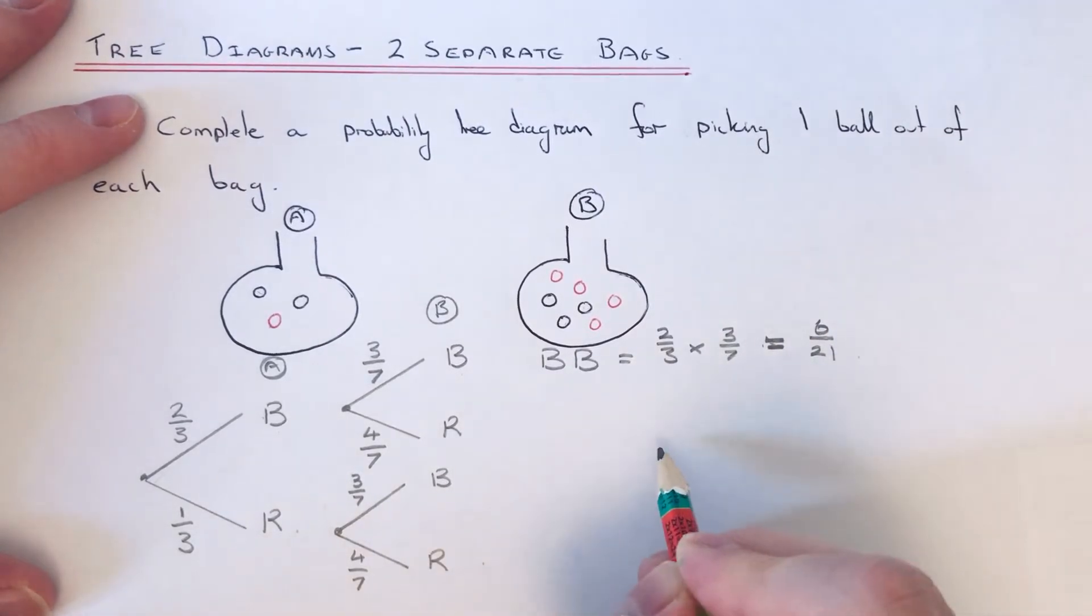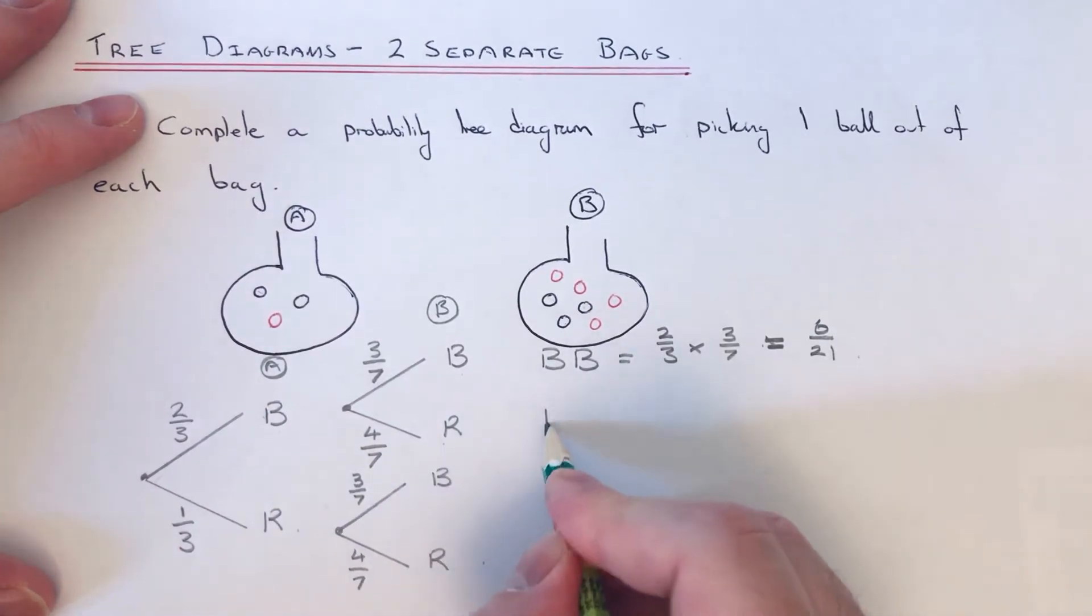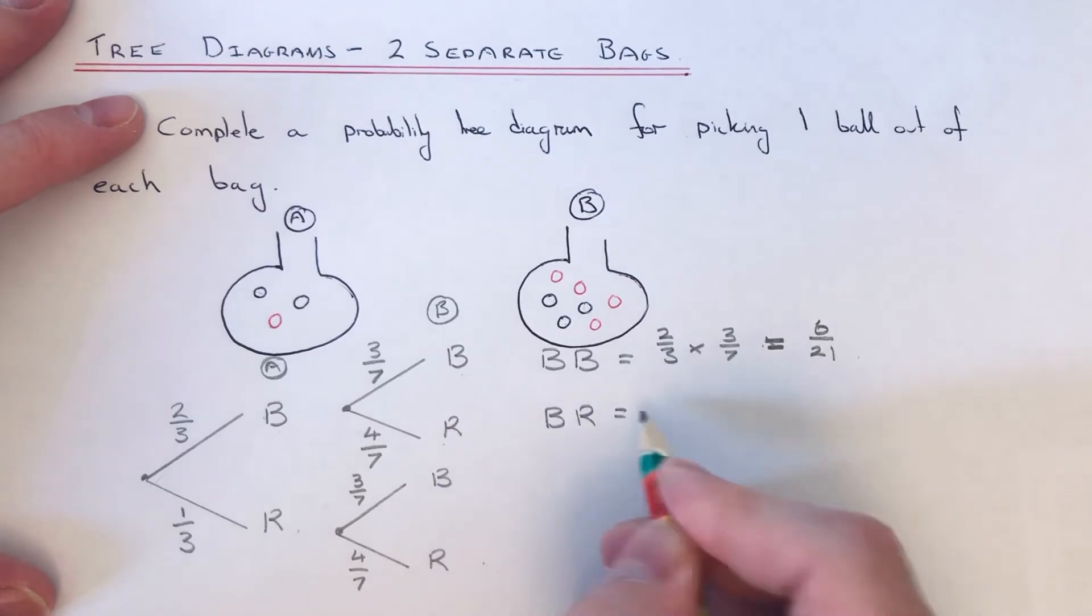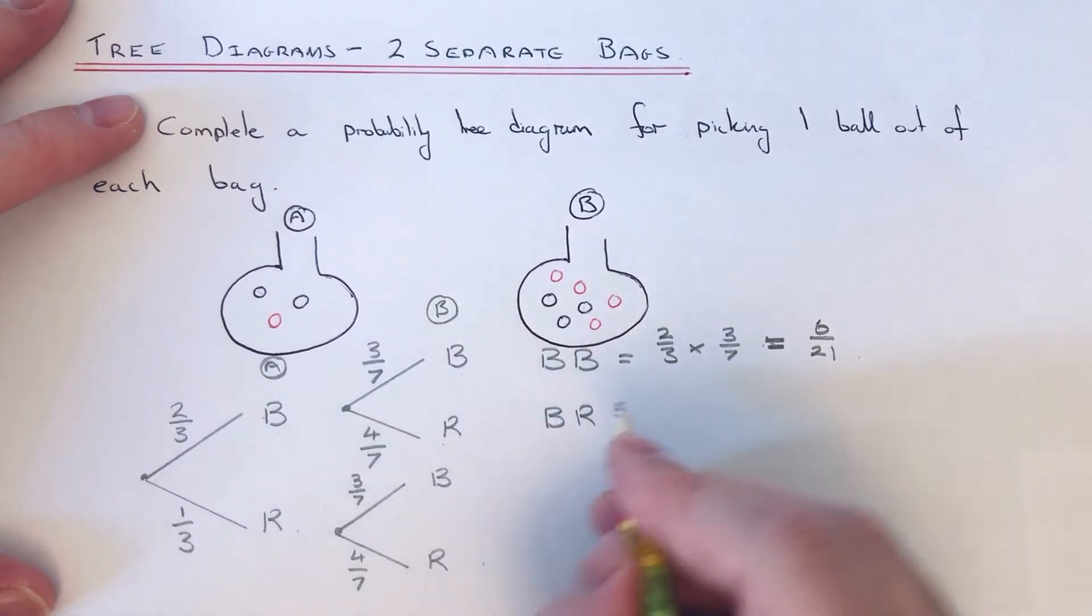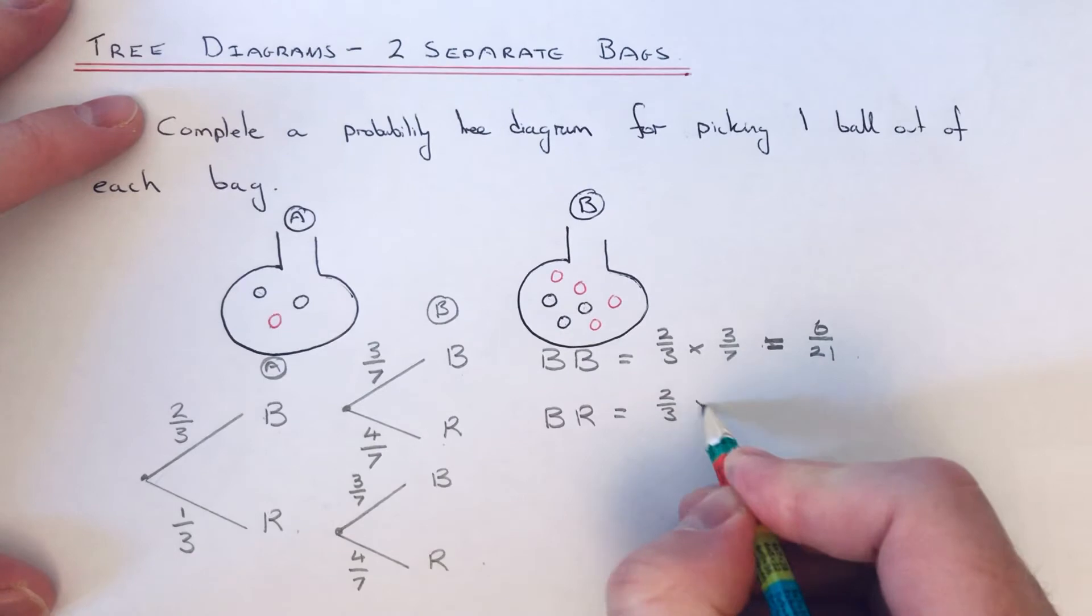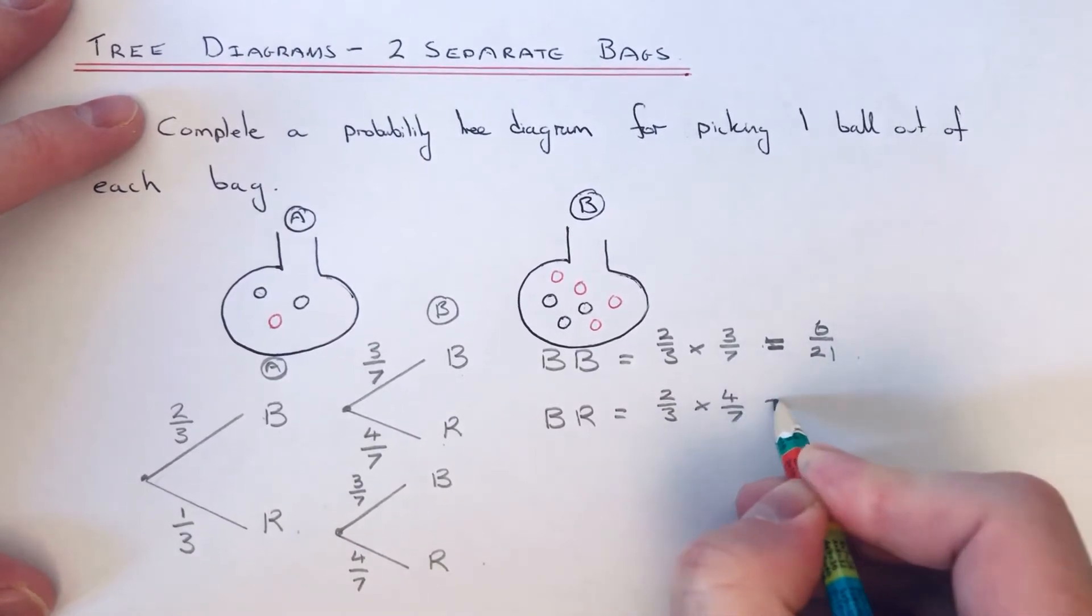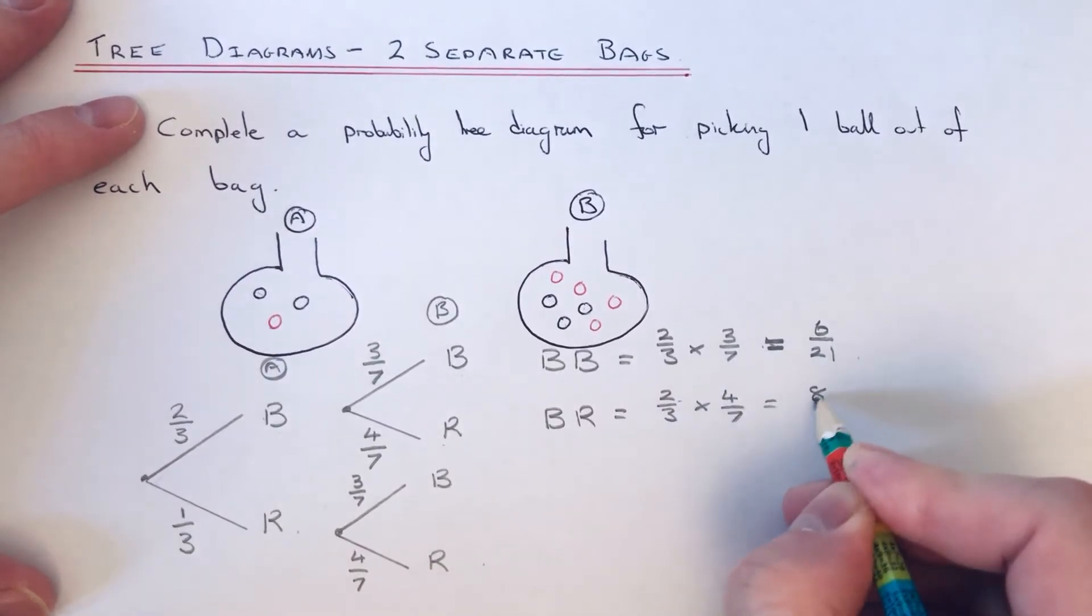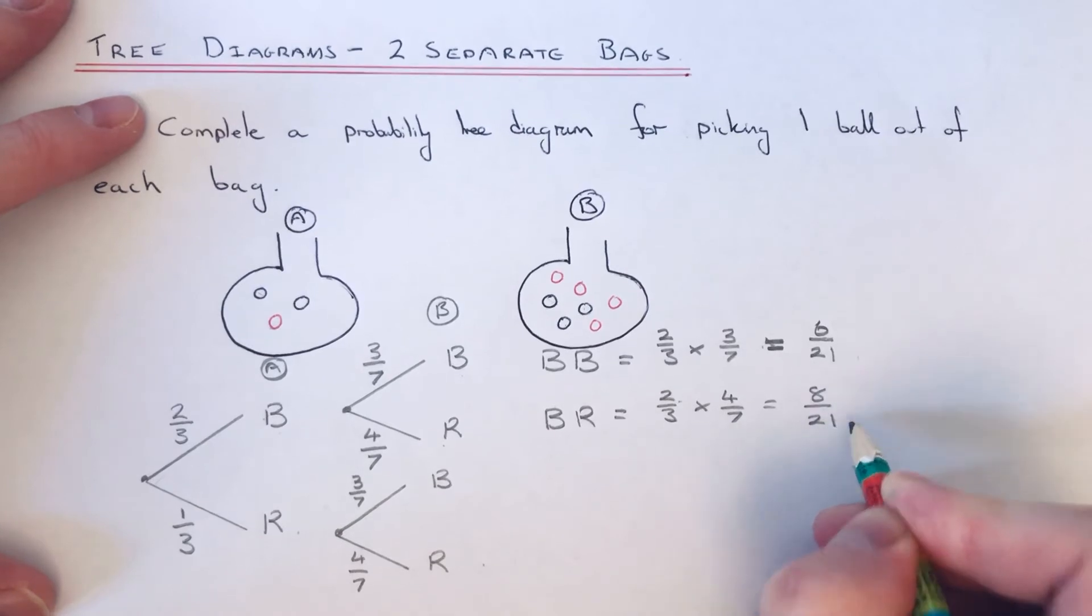The next route would be a black ball out of bag A and a red ball out of bag B, so that's black and red. So again we just times these two fractions together, so it'd be two thirds times four sevenths. Two times four is eight, three times seven is twenty one.